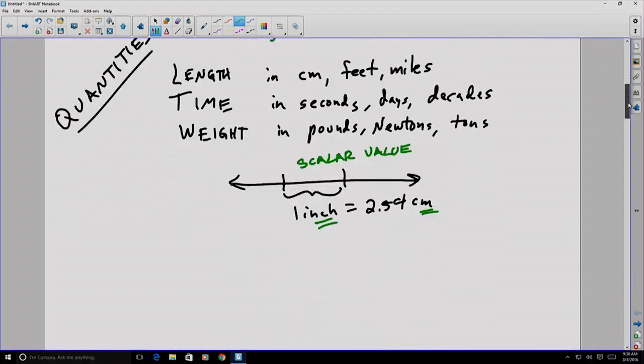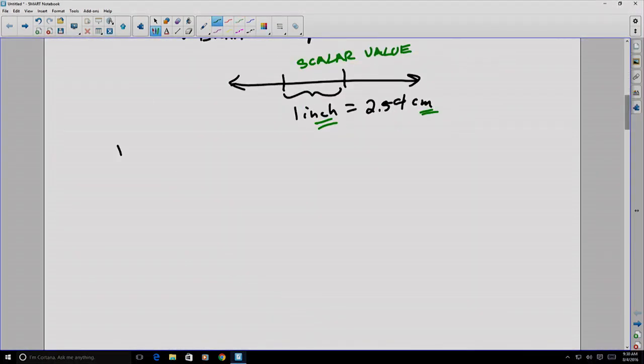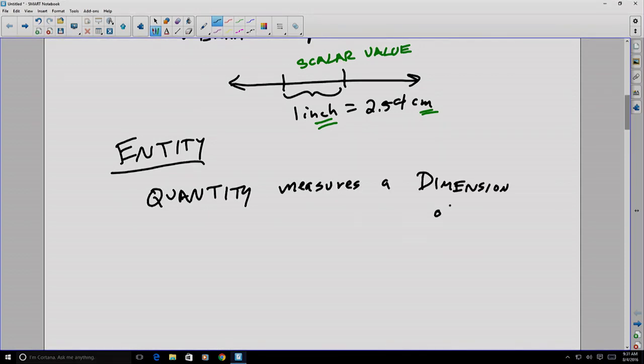Let's consider another term here. An entity is some identical object or construct with a dimension that can be measured with a quantity. In other words, a quantity measures a dimension of an entity.